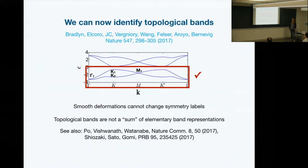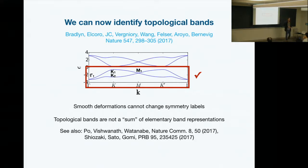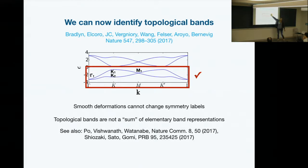This brings us back to the first main point: if you have a band structure and want to know if your valence bands are topological, you compute all the symmetry labels at high symmetry points and compare them to the list on the Bilbao Crystallographic Server. If your labels are not a sum of any of the labels on the server, you know there's no way to smoothly deform your bands to some atomic limit — because such a smooth deformation can't change the symmetry labels while keeping the gap open. So this accomplishes our first goal.